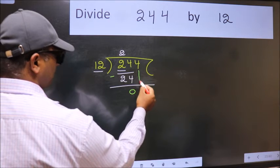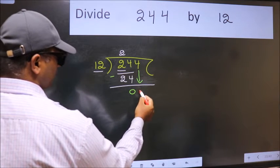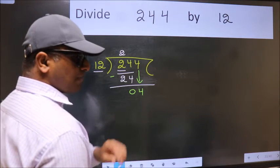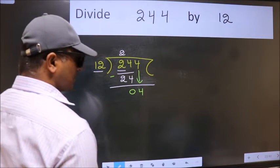After this, bring down the beside number. So 4 down. After this step, the mistake happens and the mistake is this.